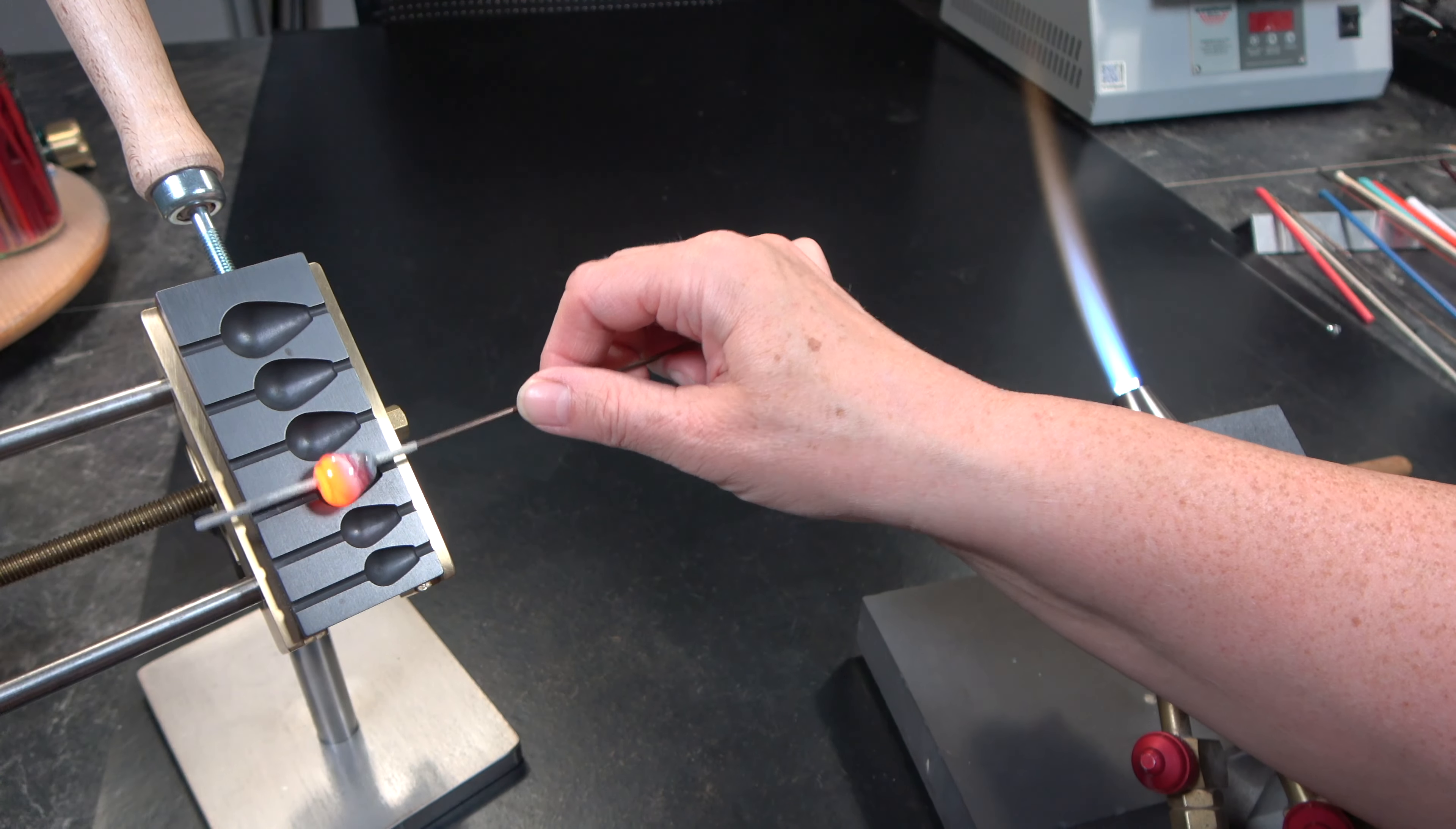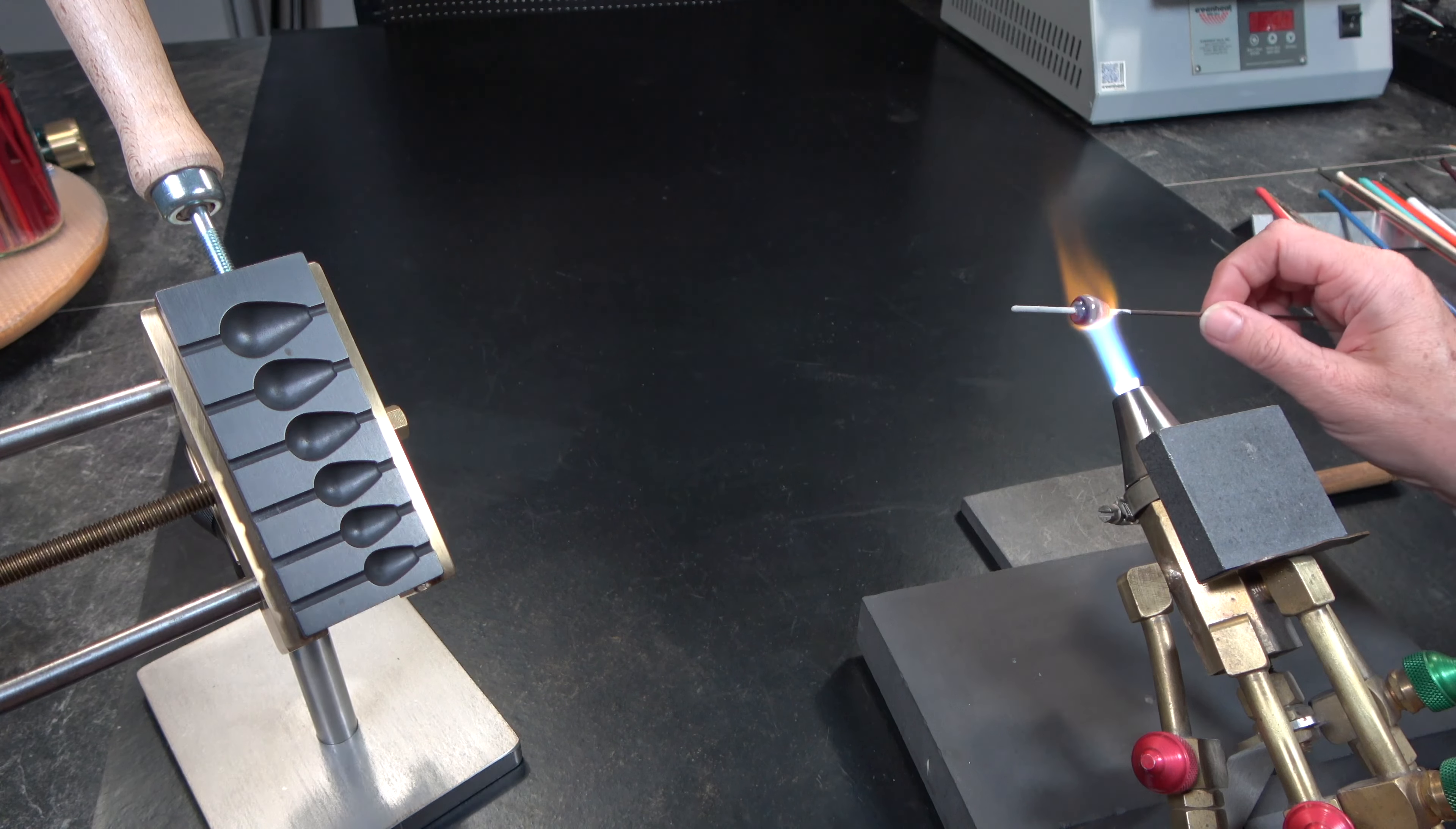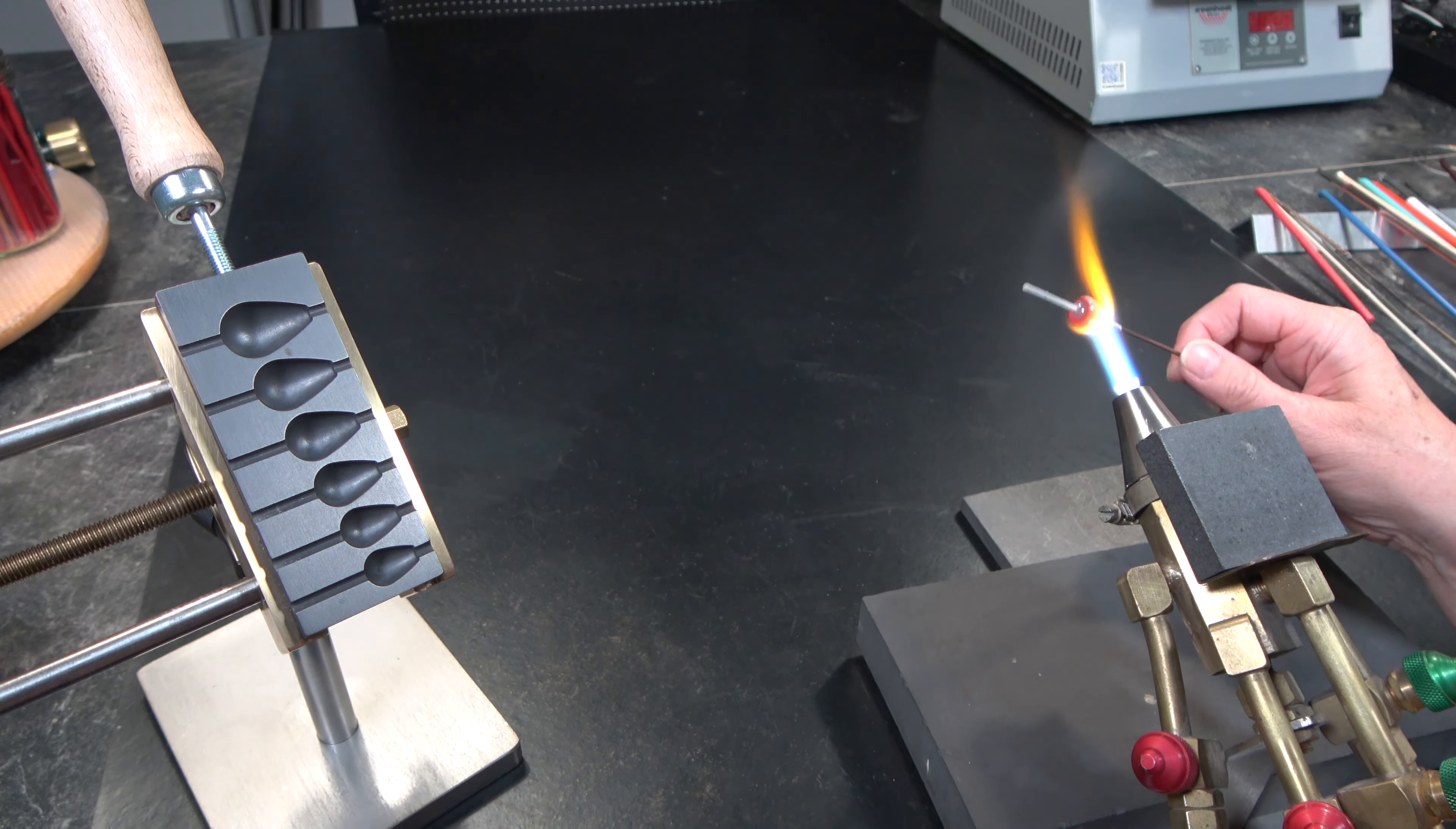While pressing into the bead roller I move the mandrel from right to left a little. This way I can make sure that the glass properly fills out the mould.